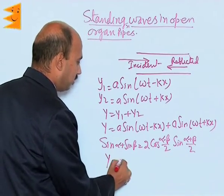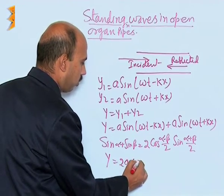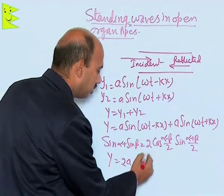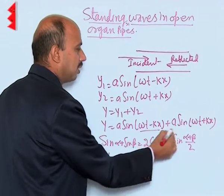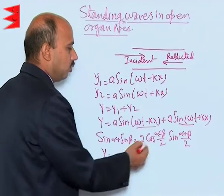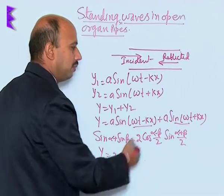By using this identity, we can get y equals 2a cos... In this case, α minus β - this is α and this is β. So if I'm doing α minus β here...